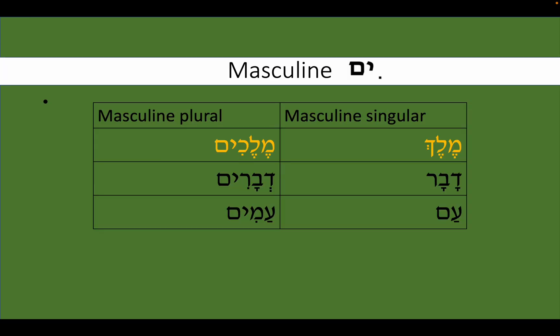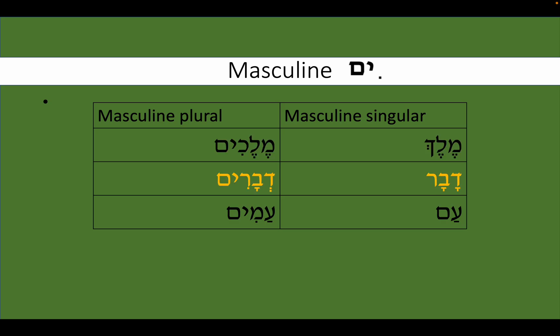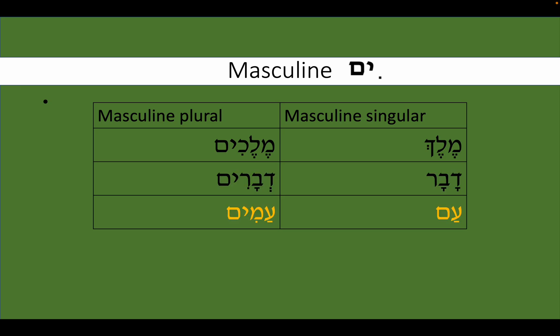Masculine nouns usually will end with '-im' to make them plural. Examples: Melech, king — Melechim, kings. Devar, word or thing — Devarim, words or things. Am, people or nation — Amim, peoples or nations.